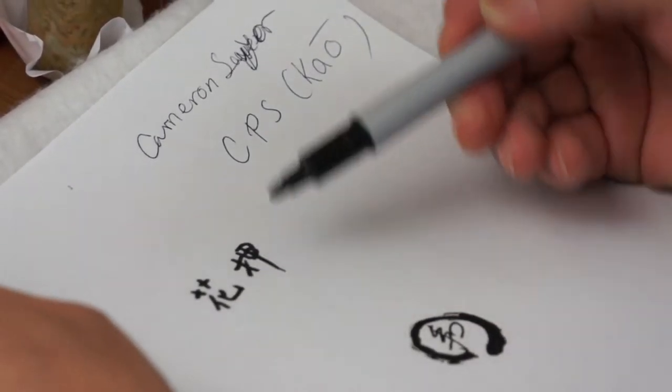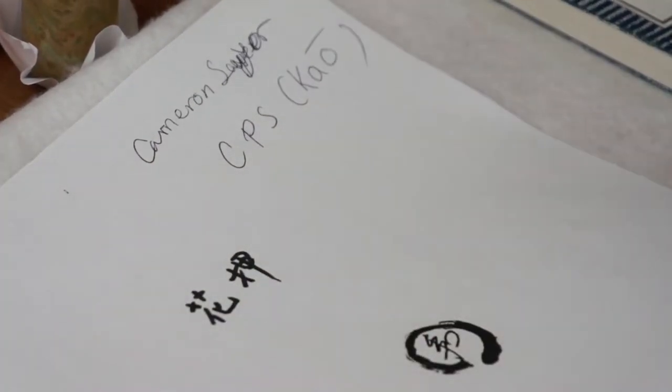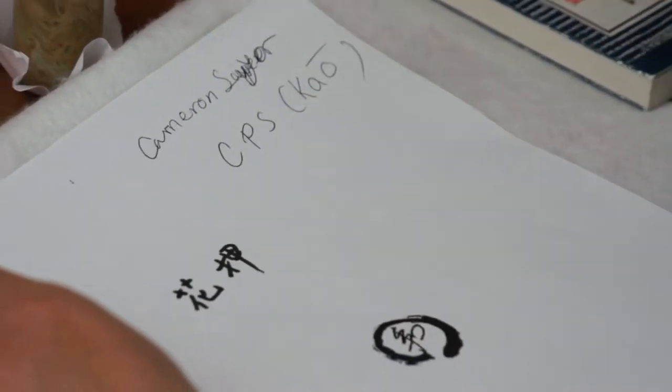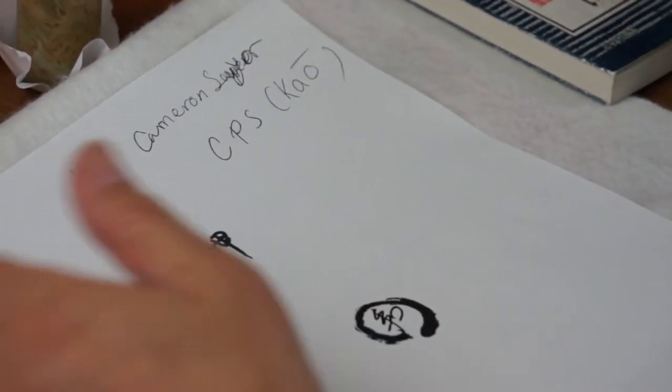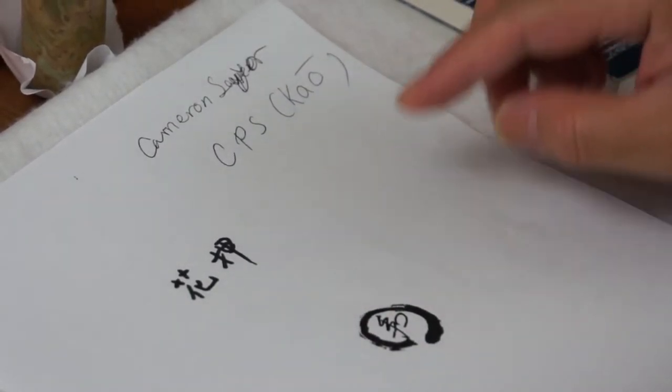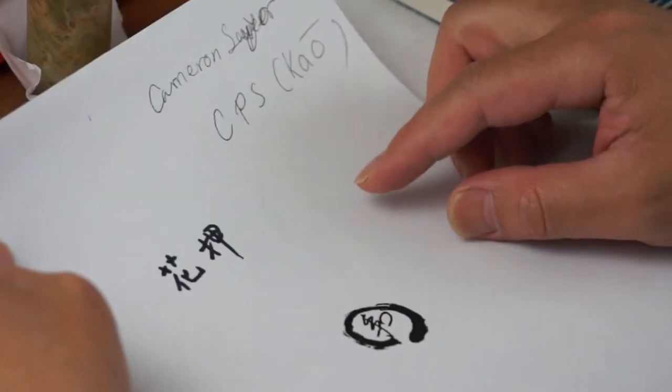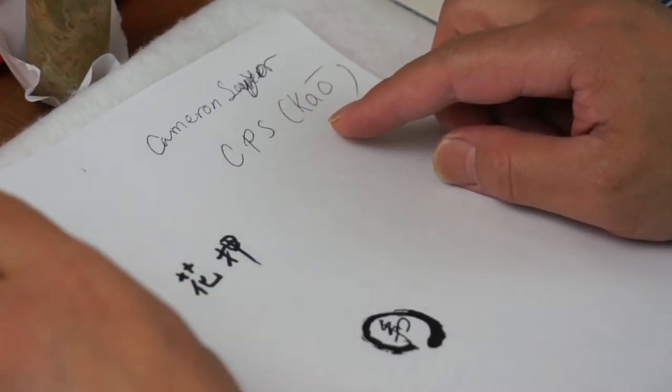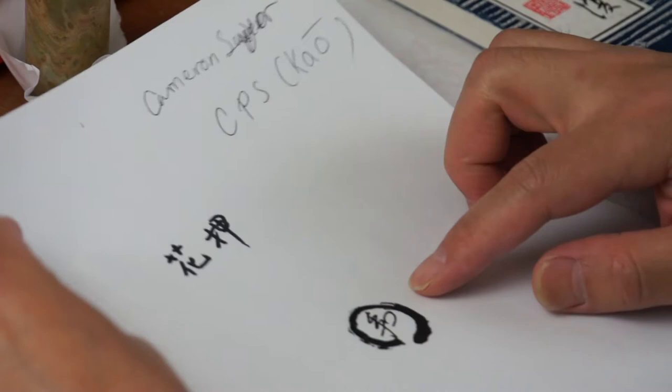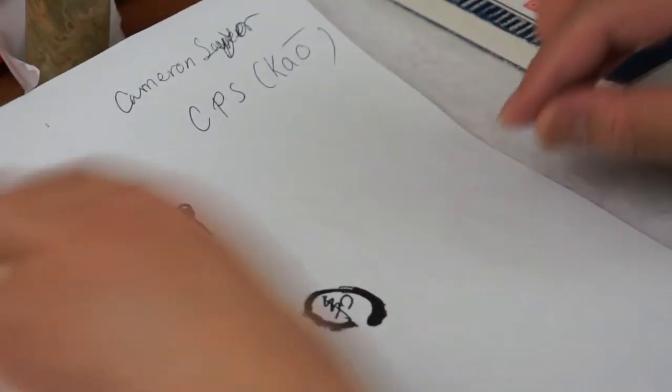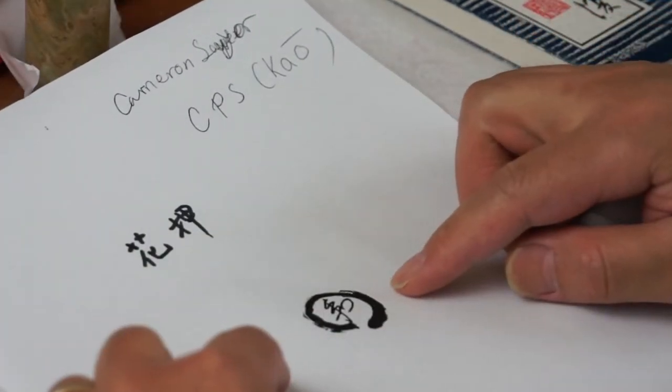Literally, a flower mark because this kind of seal is a special category translated into English as a signature mark. This seal here is designed by Cameron Sayer. Cameron is an artist and a calligrapher himself.